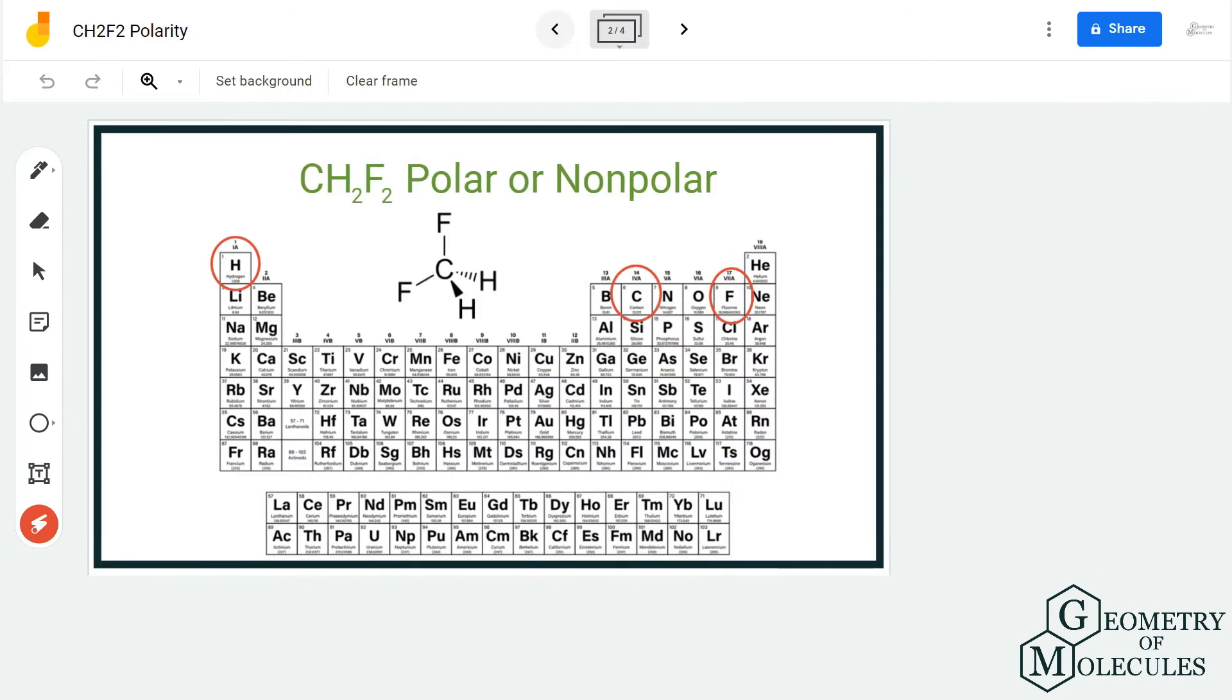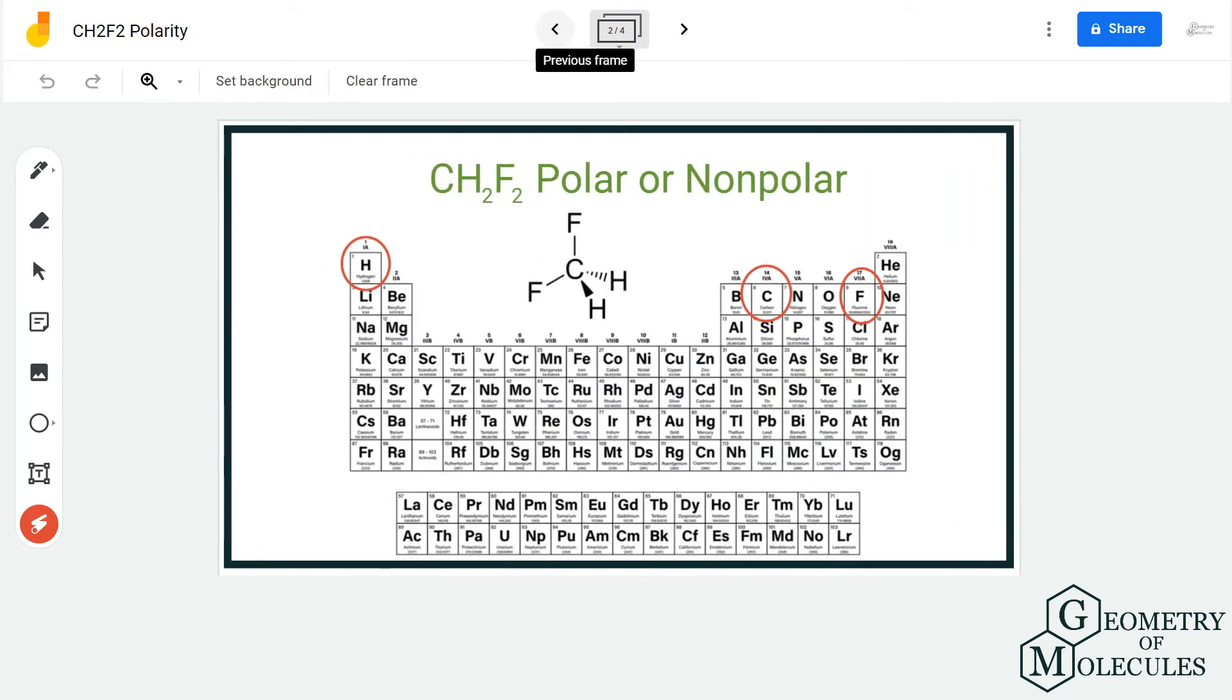When we come to hydrogen, the electronegativity for hydrogen is 2.20, and for carbon it is 2.55, which is less than 0.4. So these bonds are not polar. But when you look at fluorine's electronegativity and compare it with carbon and hydrogen, you will realize that the difference is much more than 0.4.